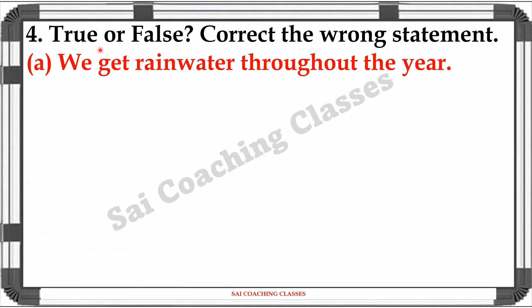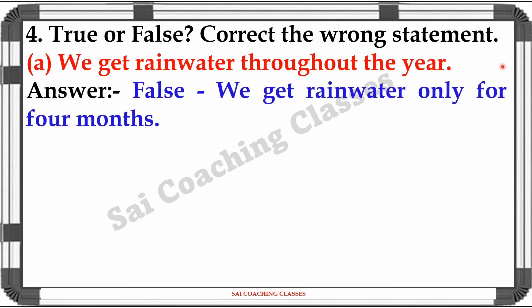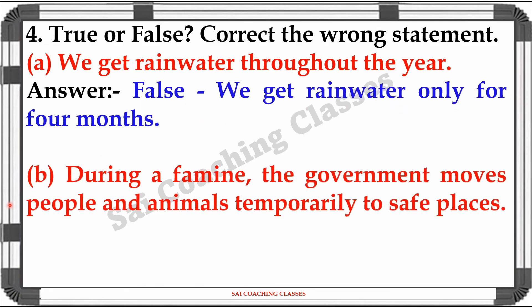Question 4 - True or False? Correct the wrong statement. A: We get rainwater throughout the year. Answer: False. We get rainwater only for 4 months. B: During a famine, the government moves people and animals temporarily to safe places. Answer: True.